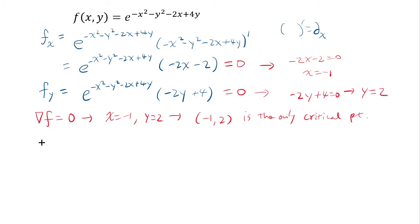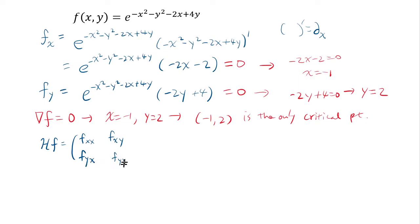Once we identify the critical point, we figure out its nature using the Hessian. The Hessian is the matrix of all possible second derivatives — differentiating by x then x, x then y, y then x, and y then y. We need to evaluate this at the critical point, so we need fxx evaluated at negative 1 comma 2.